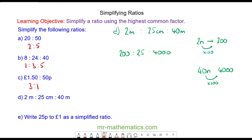The highest common factor of our three numbers now is 25, so we'll divide everything by 25. 200 divided by 25 is 8, 25 divided by itself is 1, and 4000 divided by 25 is 160. So this is the simplified ratio.